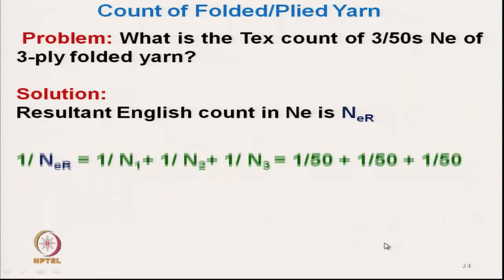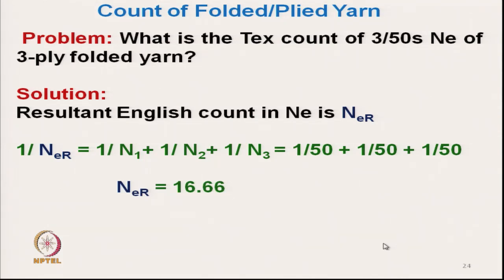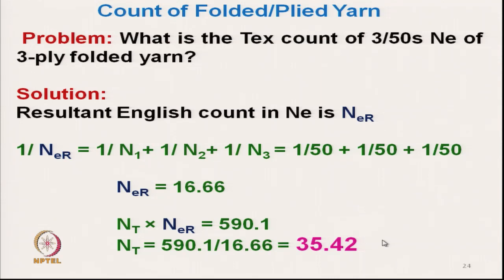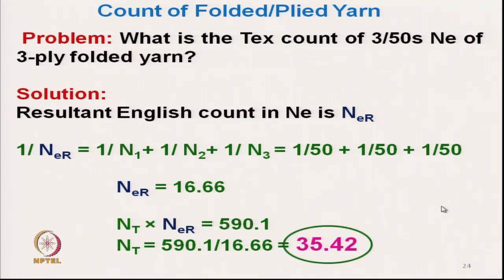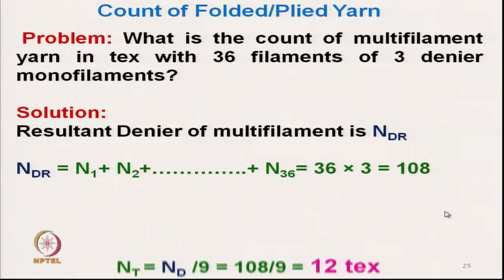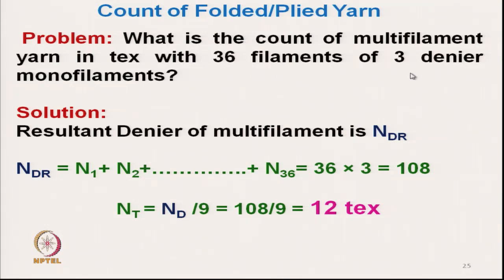We also discussed different practical problems and how to calculate the resultant counts. For example, 3-ply yarn of the same English count — how to convert it to a 3-ply folded yarn count in TEX system. If we ply 3 of 50 English count, the resultant count will be 35.42 TEX. Similarly, in the direct system, 36 filaments of 3 denier each monofilament gives a TEX count of 12 TEX.